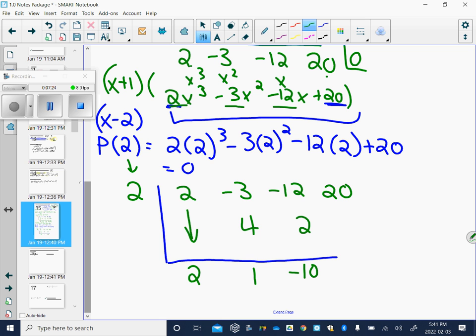1 times 2 is 2. Adding to negative 12 we get negative 10. Negative 10 times 2 is negative 20. And this is a good check. When we add, we get 0.